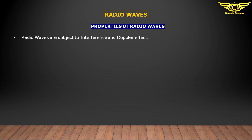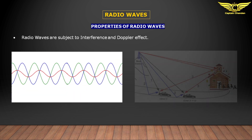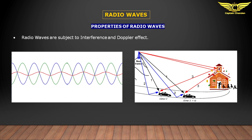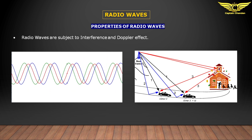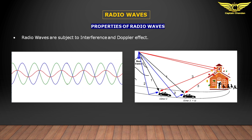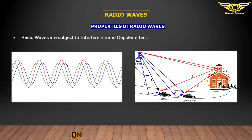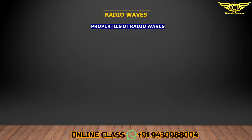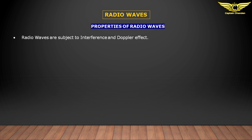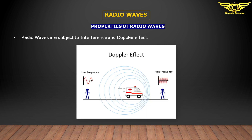Radio waves are subject to interference and the Doppler effect. Interference is very common in daily life — for example, while talking on the phone it is sometimes difficult to hear the other person's voice. In older AM radios, incoming waves have a lot of interference, especially in bad weather. The Doppler effect: when a police car passes you, the siren pitch is very high due to increased frequency; when the car is going away from you, the pitch is low because of lower frequency. This phenomenon is called the Doppler effect.